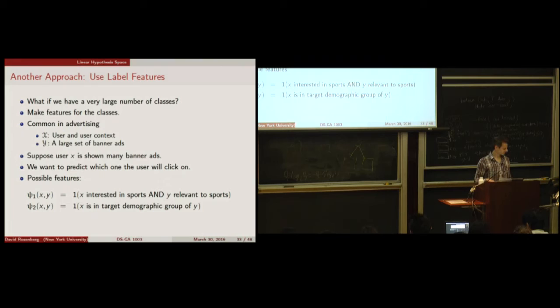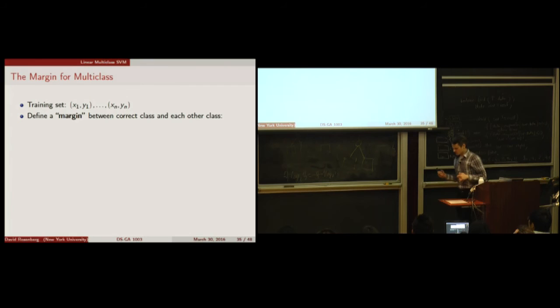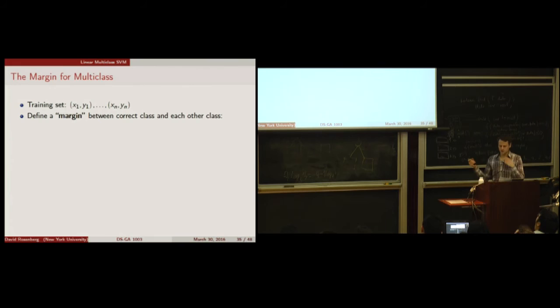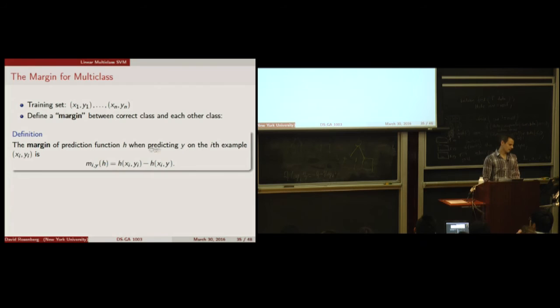For instance, a feature could be: user X is interested in sports AND ad Y is relevant to sports. Any sports-relevant ad and any sports-interested user would fire this feature. This lets us leverage characteristics of the label itself in the feature vector representation, allowing knowledge to transfer across many ads and users. This is how you can think about ad targeting: characterize both the ad and the person and find their compatibility.